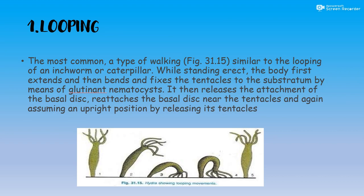The first type of locomotion is looping. This is the most common type — a type of walking similar to the looping of an inchworm or caterpillar. While standing erect, the body is first extended and then bent, fixing the tentacles to the substratum by means of glutinant nematocysts. It then releases the attachment of the basal disc and reattaches the basal disc near the tentacles.